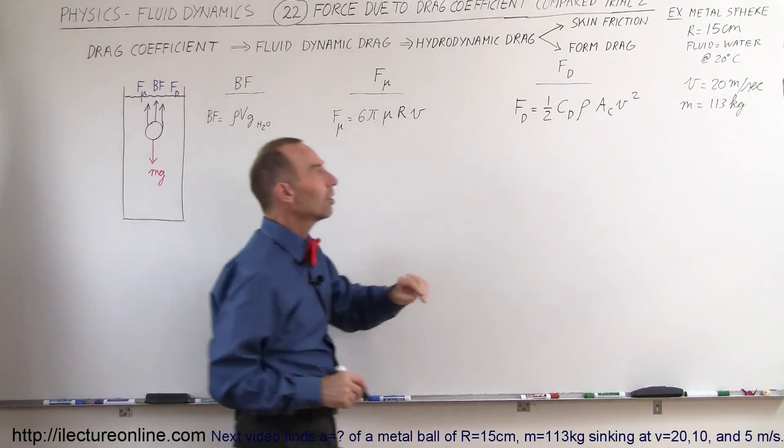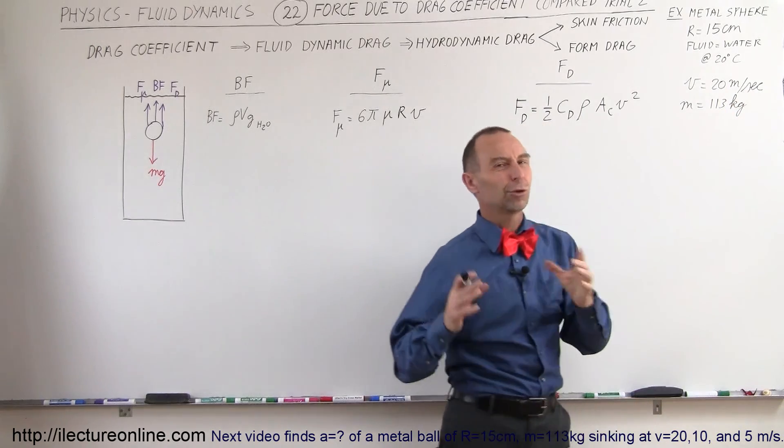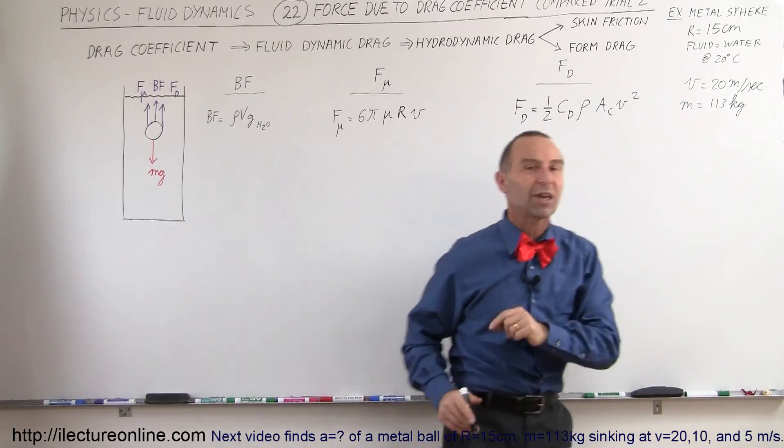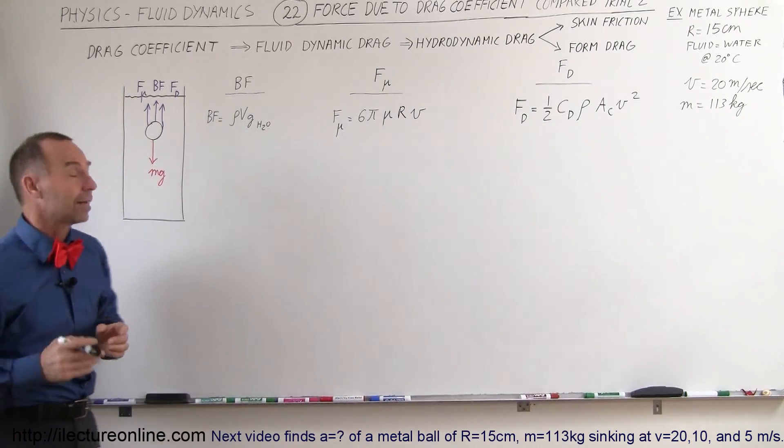What we're going to do now is make a larger object: an object with a radius of 15 centimeters, a mass of 113 kilograms, like the size of a basketball made out of metal, moving at 20 meters per second through a fluid. What will happen now? What will be the dominant force on that object?